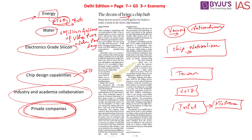Tata Group is already in talks with three states — Tamil Nadu, Telangana, and Kerala — and is planning to invest over 300 million dollars to set up a semiconductor manufacturing facility. Addressing the inherent challenges and creating an encouraging policy ecosystem is the need of the hour so that India can become a manufacturing hub for semiconductor technology.